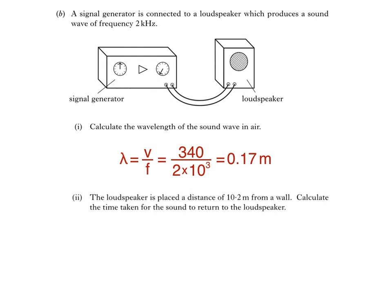B part 2 says the loudspeaker is placed at a distance of 10.2 meters from a wall. Calculate the time taken for the sound to return to the loudspeaker. We're told a distance and are asked to calculate a time here. So we'll be using this equation. Distance d equals speed v multiplied by time t. To make t the subject of the equation, divide both sides by v.